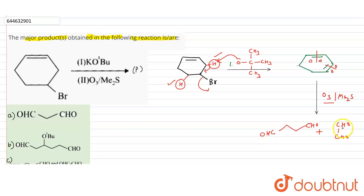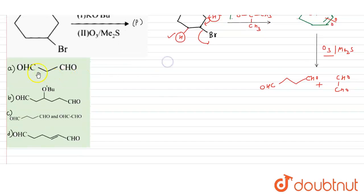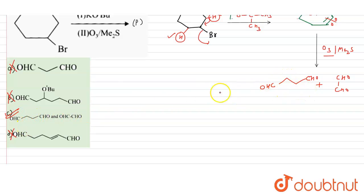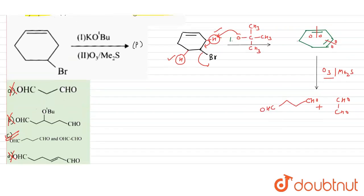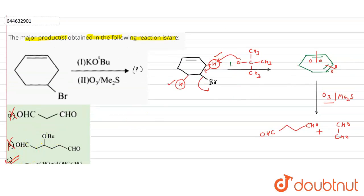We get two CHO groups — a dialdehyde product, glyoxal. Since options A, B, and D each show only one product, they cannot be correct. Option C shows both products and is therefore the correct answer.